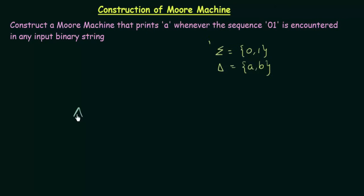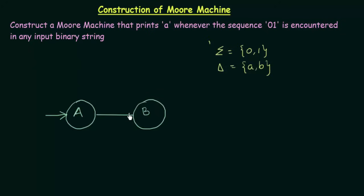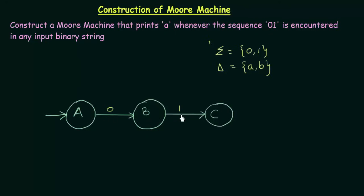I will first start with my starting state which I will call state A. A will go to the next state which I will call state B on getting input 0, because I am trying to get the sequence 01. Then B will go to the next state, state C, on getting the input 1.